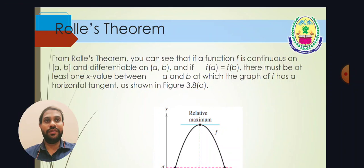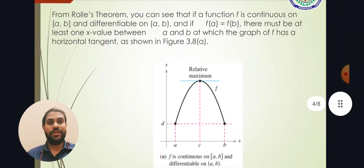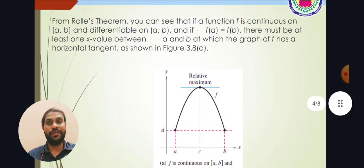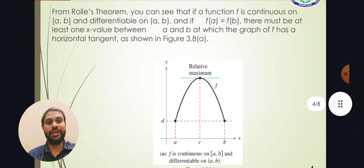So f is continuous on [a, b] and differentiable on (a, b). If f(a) = f(b), then there must be one x value between a and b in the graph such that it is a horizontal tangent. Continuous means all the points in the graph are connected — here there are three points and all three are connected. The second condition is differentiable, which means the connected line will form a smooth curve.